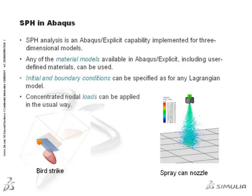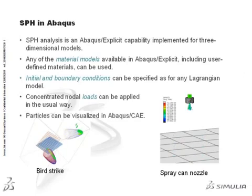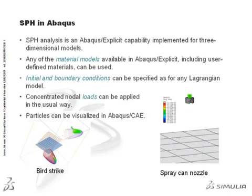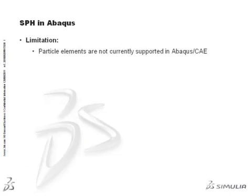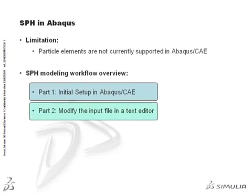Concentrated nodal loads can be applied in the usual way. However, the only distributed load type allowed is gravity. Particles can be visualized in Abaqus CAE as circular disks, as seen in all the examples shown in this presentation. At present, there is no direct support for the creation of particle elements in Abaqus CAE. However, the initial SPH model preparation can be accomplished within Abaqus CAE, after which some manual editing of the input file generated by Abaqus CAE will be required to complete the SPH model definition.